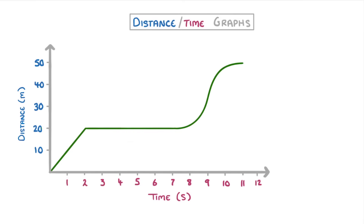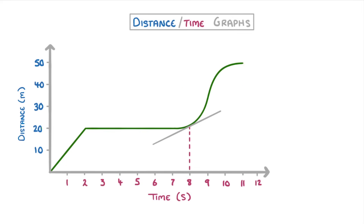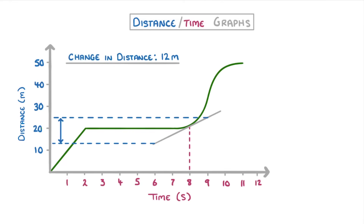Now one really important point is that while the speed is constantly changing, like it is in these last two stages, it's a bit trickier to find the speed at any particular point, because we can't just take a total of the entire period like we did for the first stage. Instead, if we wanted to find the speed at 8 seconds, we'd have to draw a tangent to the curve at that point. Because a tangent is just a straight line that has exactly the same gradient as the curve does at the point where they touch. Once we have this tangent, we can calculate its gradient by picking two points along the line, and dividing the change in distance, which is around 12 meters, by the change in time, which is 3 seconds. So we get a speed of 4 meters per second.